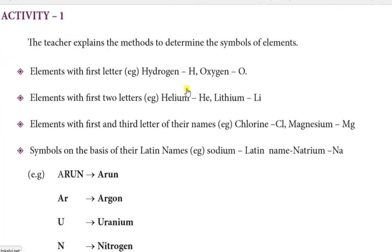Coming to the activity. If you are using a periodic table, use various elements and their symbols. Either the first letter of the English name - Hydrogen H, Oxygen O. Then, the first two letters of the English name - Helium HE, Lithium Li.